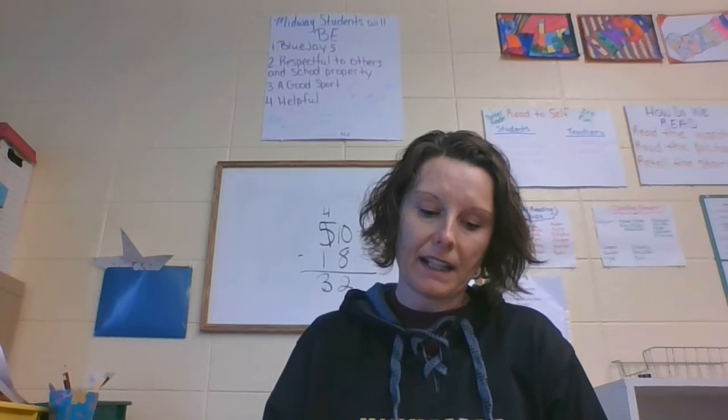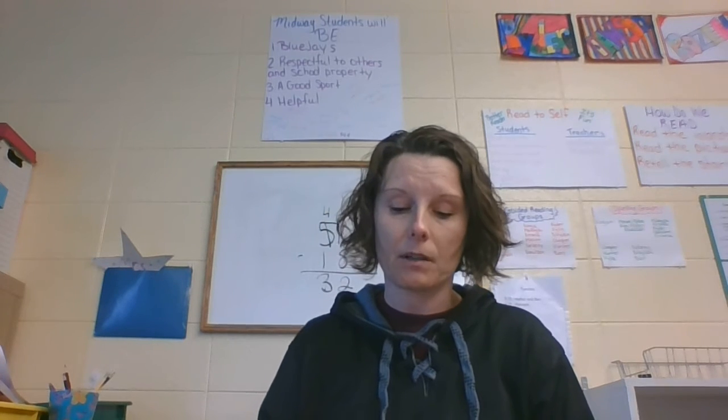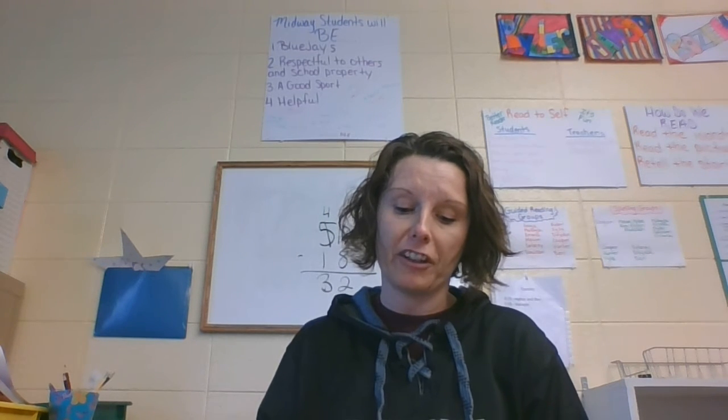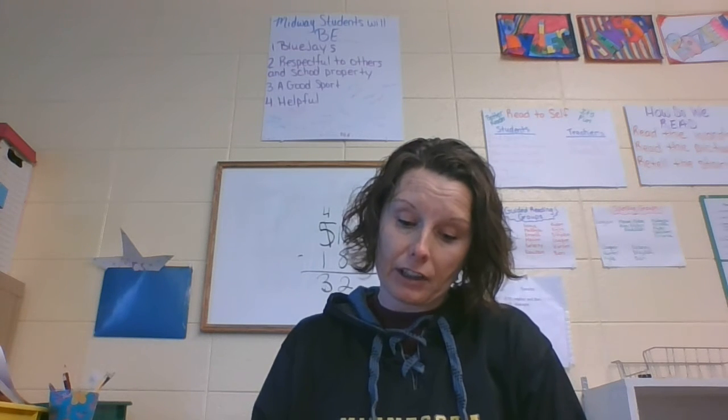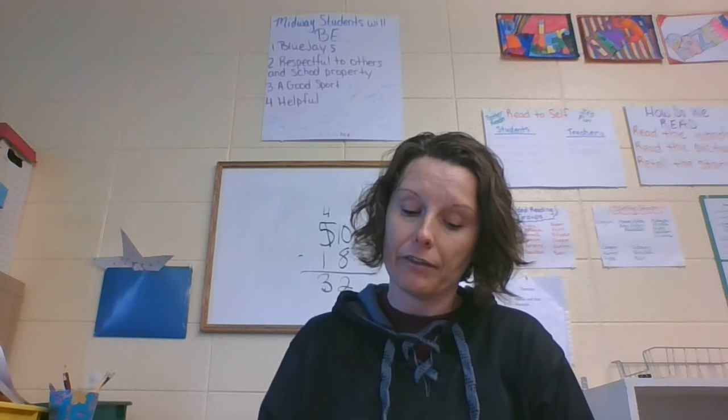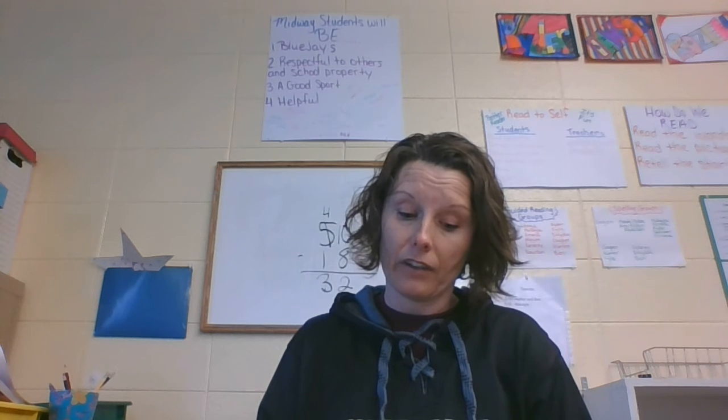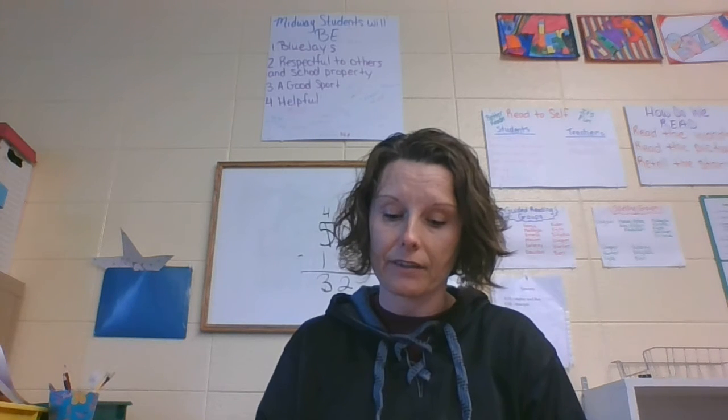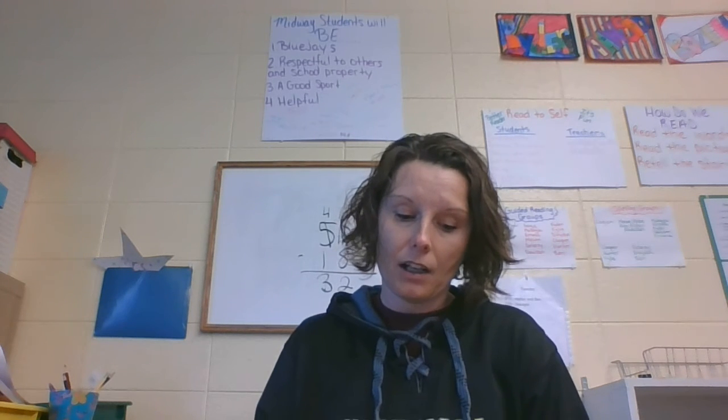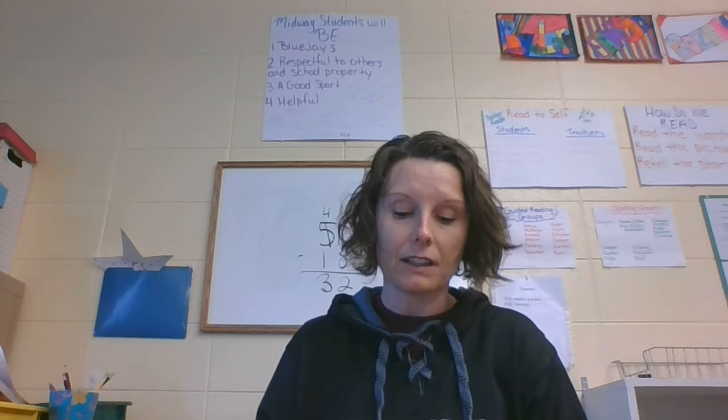Alright, next problem. Circle the best number sentence to use to estimate the sums of 51 and 38. So I'm going to look at the first number of 51. And I think in my head, the two 10s are 50 and 60. Well, I know that 51 would round down to 50. So I'm going to cross out all of the 60 plus options. So I'm going to cross off 60 plus 30 and I'm going to cross off 60 plus 40. So now my options are 50 plus 30 and 50 plus 40.